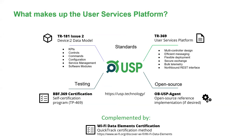What makes up the user services platform? It's made of several different components. The first is TR369 itself — the user services platform — which defines the protocol, how everything works, and how everything is secured. That's in partnership with TR181 issue two, or the device two data model, which defines all the KPIs, controls, commands, parameters, objects, and things that can be manipulated by a USP controller. It's backed by the BBF.369 certification program, a self-certification program where people run testing on an approved tool by themselves and submit their results to an approved lab. The test plan is defined in TP469. And there is an official open-source agent as a reference implementation — the OB-USP agent — managed by the Broadband Forum. All of these can be found at USP.technology.